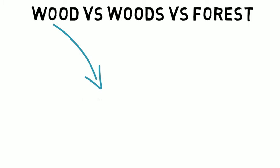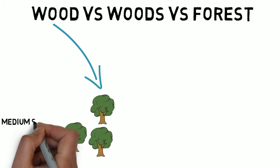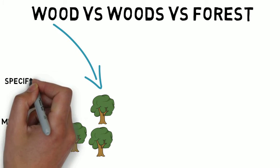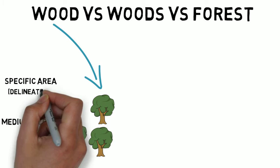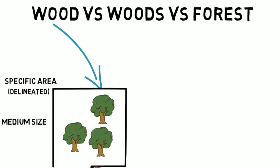Firstly, a wood. A wood means a medium-sized group of trees, and it refers to a specific area — the formal term is delineated. That means that there's a boundary around the trees.